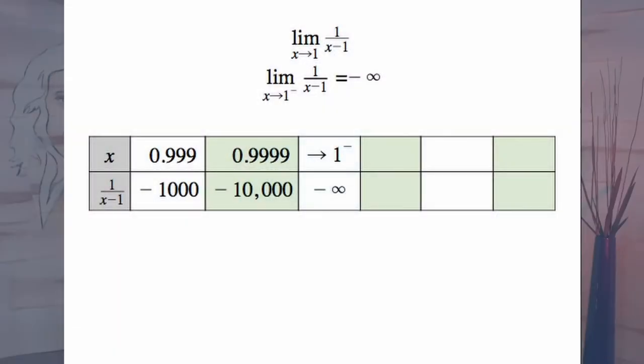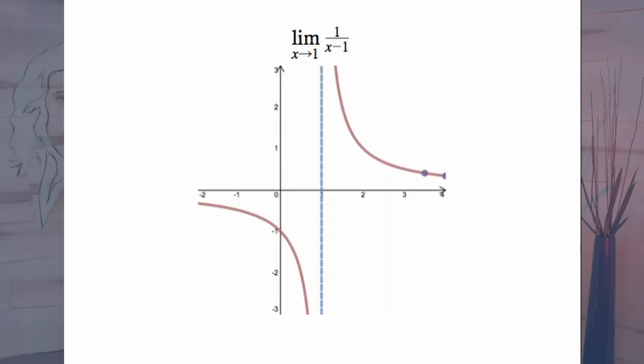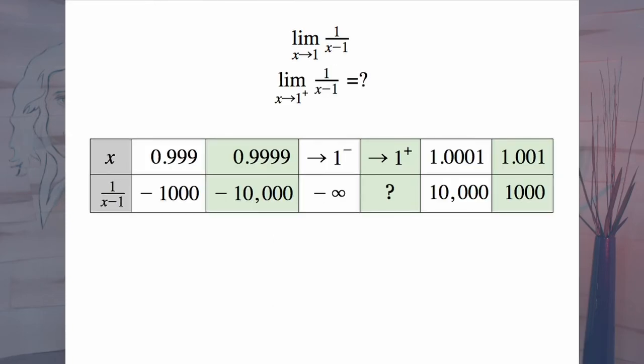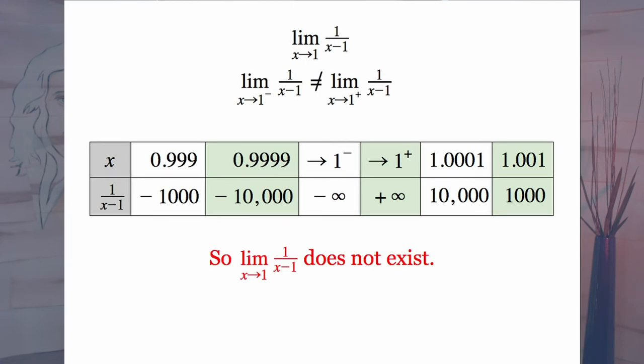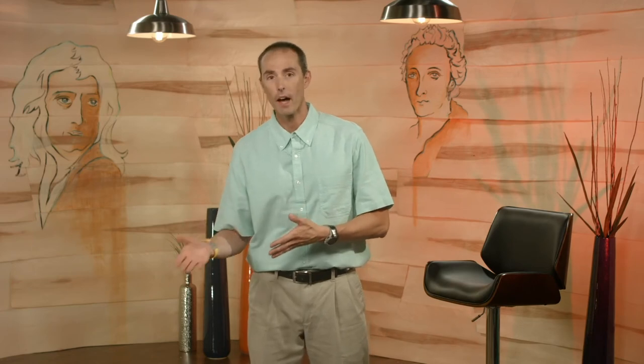We want students to recognize that as x gets close to 1 from the left-hand side, 0.999 minus 1 gives negative values that are large in magnitude — meaning they're heading towards negative infinity. And if we approach from the other side using 1.001, we'd be getting large in magnitude again but towards positive infinity.